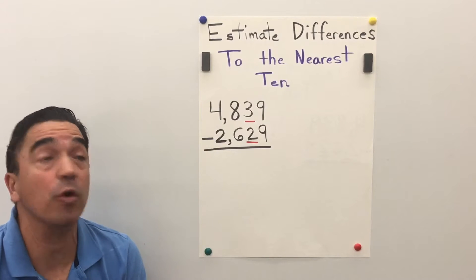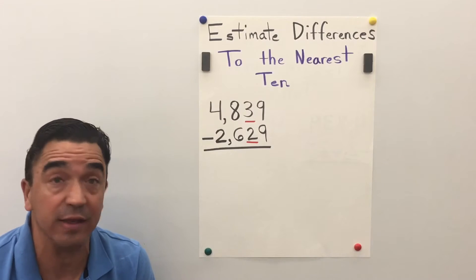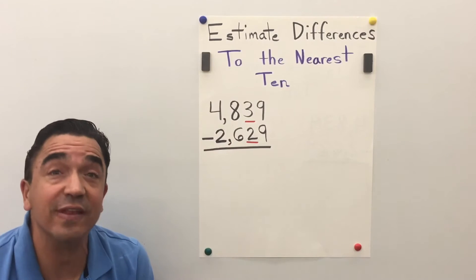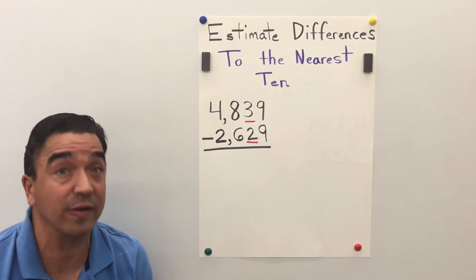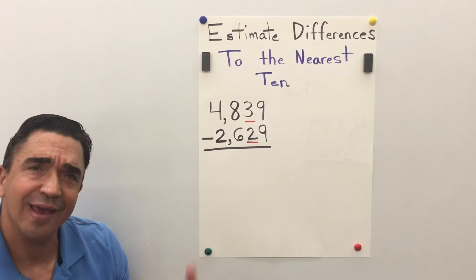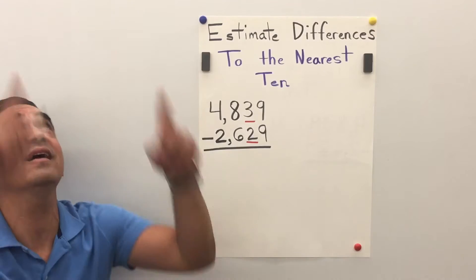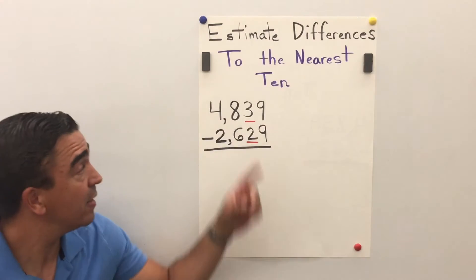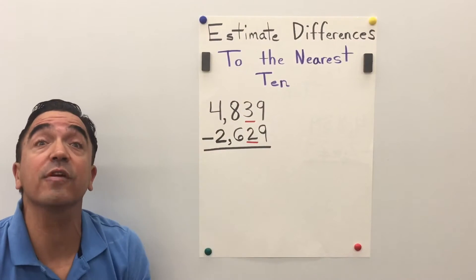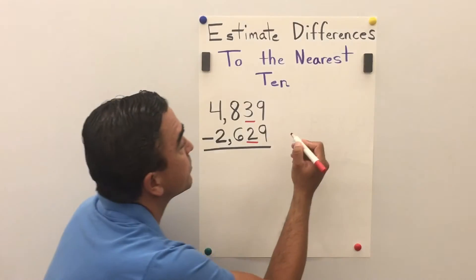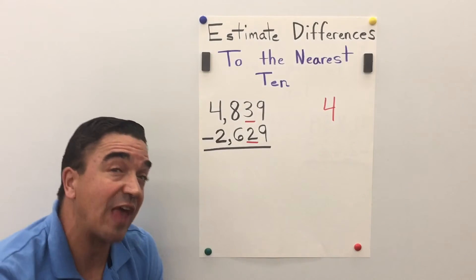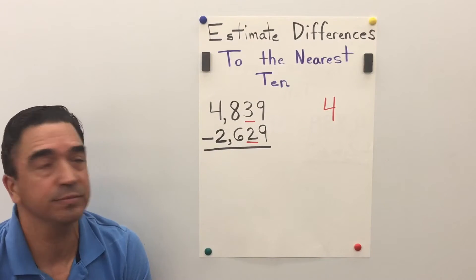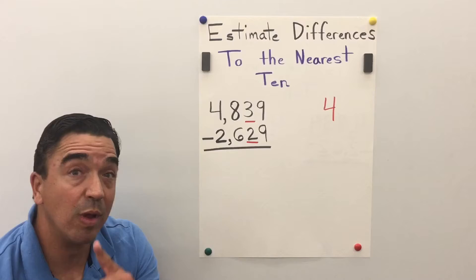Let's start with 4,839. The three is in the tens place, so the nine in the ones place is going to tell it what to do. The nine is going to tell the three to go up, so that three becomes a four. And all the digits after become a zero. There's only one.